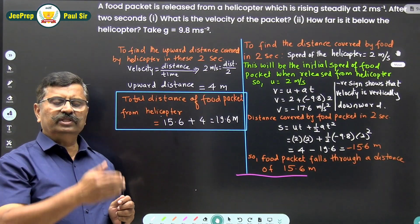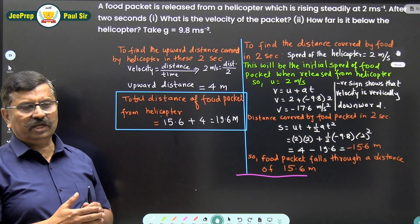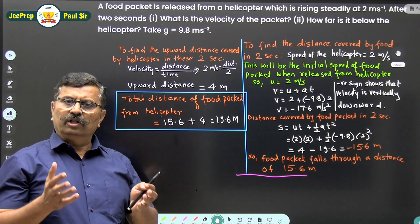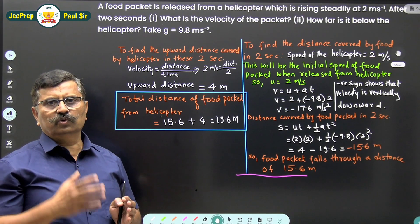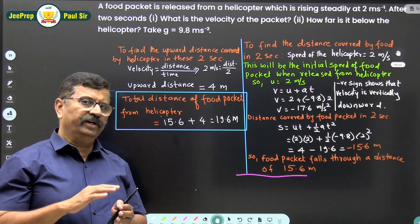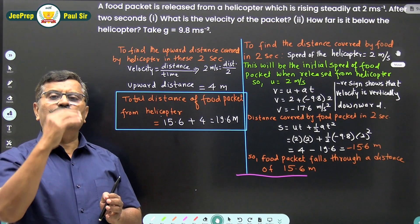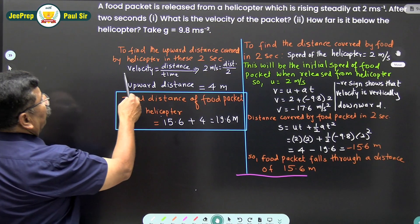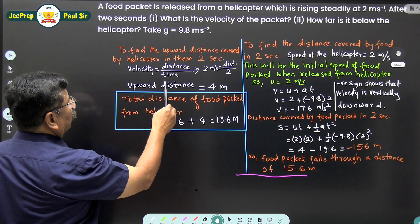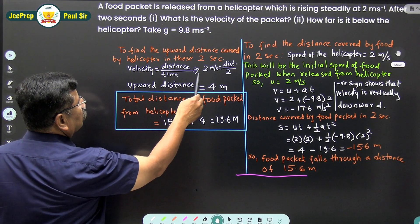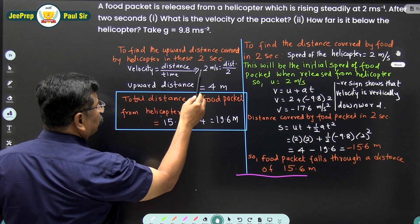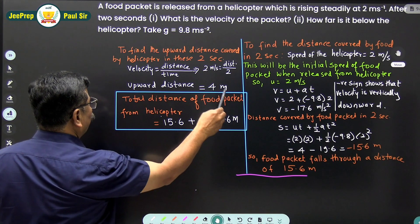That minus sign again means it is a downward distance. Now we have found how much distance the food packet attained after 2 seconds. Now we would like to find out the upward distance covered by the helicopter in these 2 seconds. Distance = velocity × time, so the upward distance = 2 m/s × 2 seconds = 4 meters.